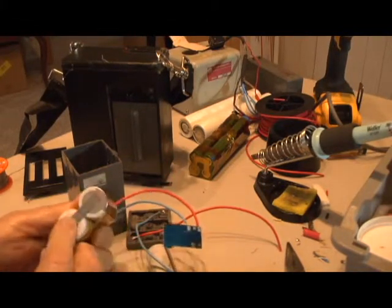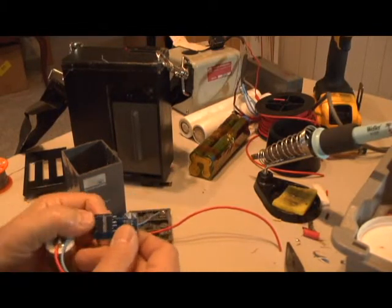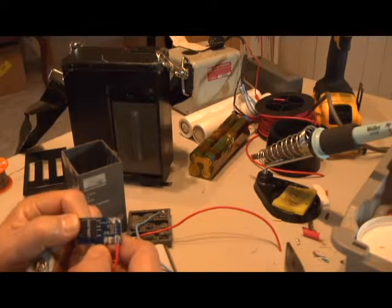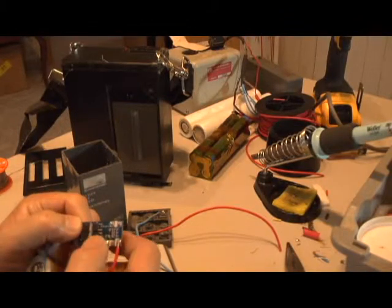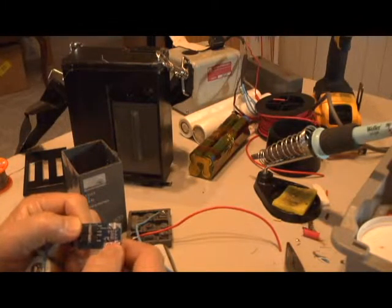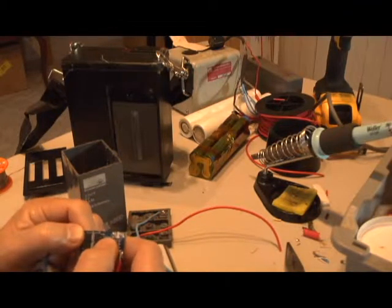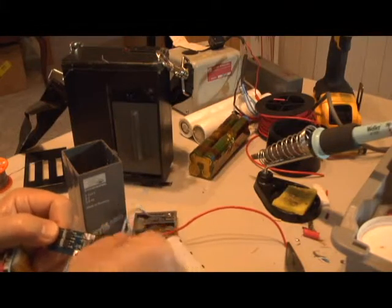So spot weld at the bottom, solder the top, put this 2S board on here. B minus to the minus part of the battery—B stands for battery. B positive to the positive side of the battery.